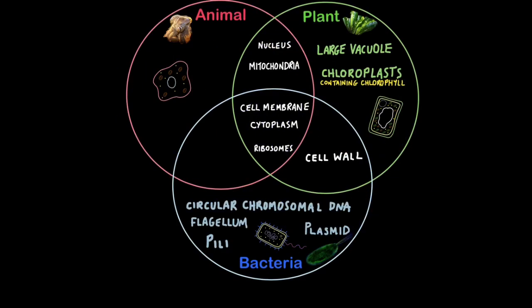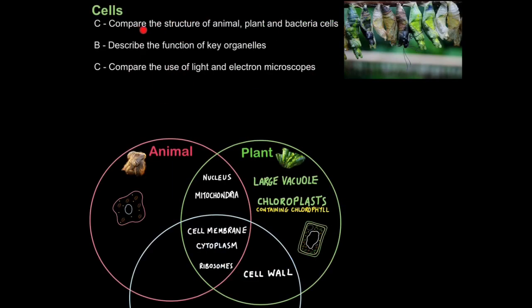So in an exam question, if you were asked to compare the structure of these cells, you would phrase your answer as follows. All three types of cells have a cell membrane, cytoplasm, and ribosomes. Only animal and plant cells contain a nucleus and mitochondria, and only bacteria and plant cells contain a cell wall. Only plant cells have a large vacuole and chloroplasts, and only bacteria cells have circular chromosomal DNA, a flagellum, plasmids, and pili. Just a simple exercise in memory. So that is how we compare the structure of animal, plant, and bacteria cells.